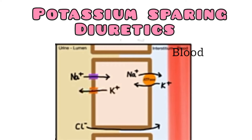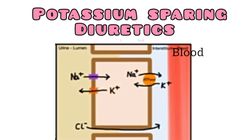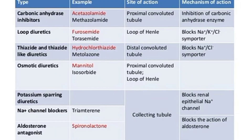Because the lumen has a negative charge, it attracts potassium ions, so potassium is secreted into the lumen. This is the normal condition in the collecting tubule. This is the physiological basis on which potassium-sparing diuretics act. An example of a potassium-sparing diuretic is spironolactone.